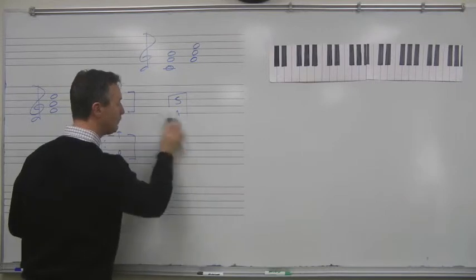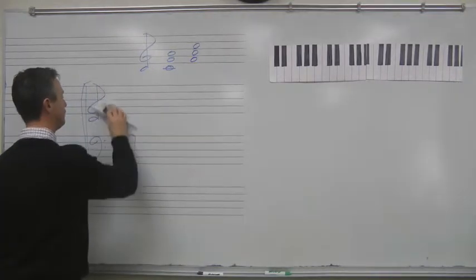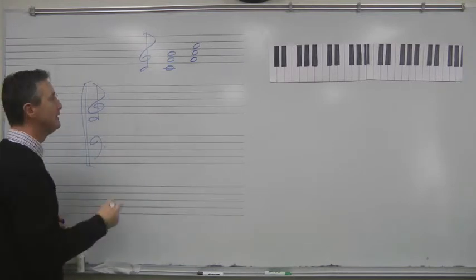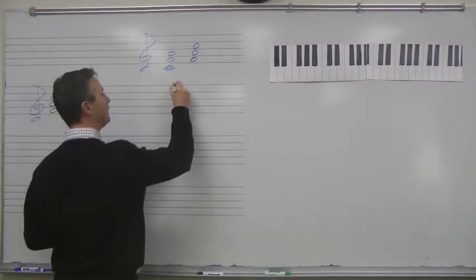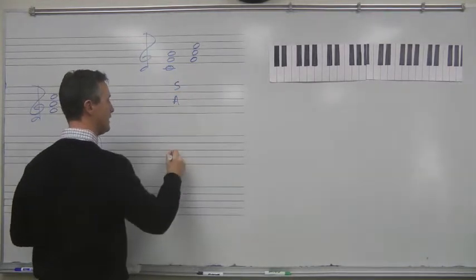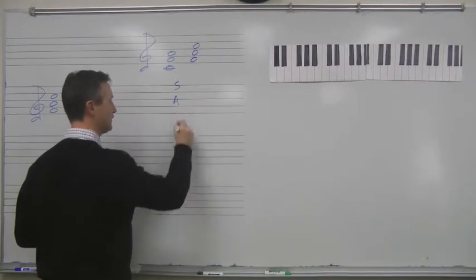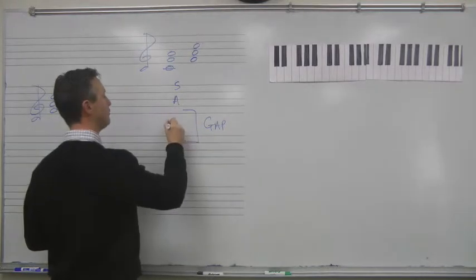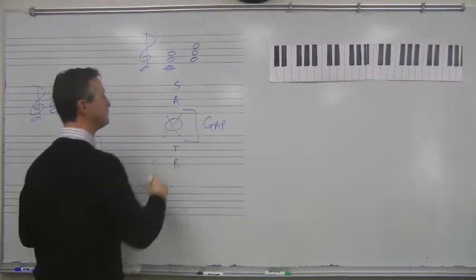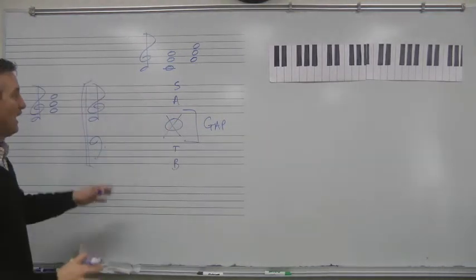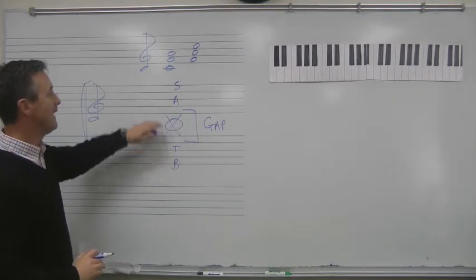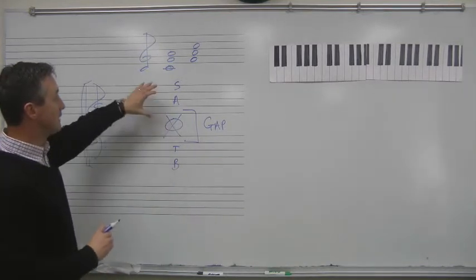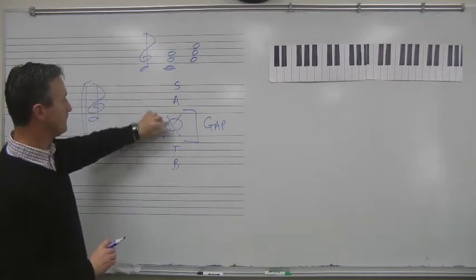Where you have problems, where you have challenges often, where things start to not sound as solid as they might, is when you have a soprano and an alto close, and a tenor and a bass close, and your gap is here. This is generally a no-zone. We do not do that. You do not want to have a large gap between alto and tenor.